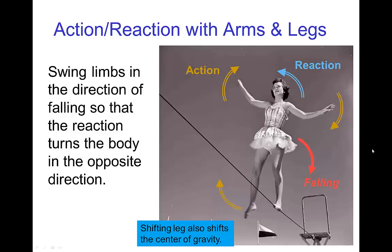When the tightrope walker does not have a pole, they can use their arms out to the sides for the same purpose. Shifting the arms allows for rapid shifts of the center of gravity to maintain balance. But to recover balance, the walker can rotate the arms — and in this case the walker is also moving her leg — rotating those in the direction of the fall, and the resulting reaction helps them to recover balance.